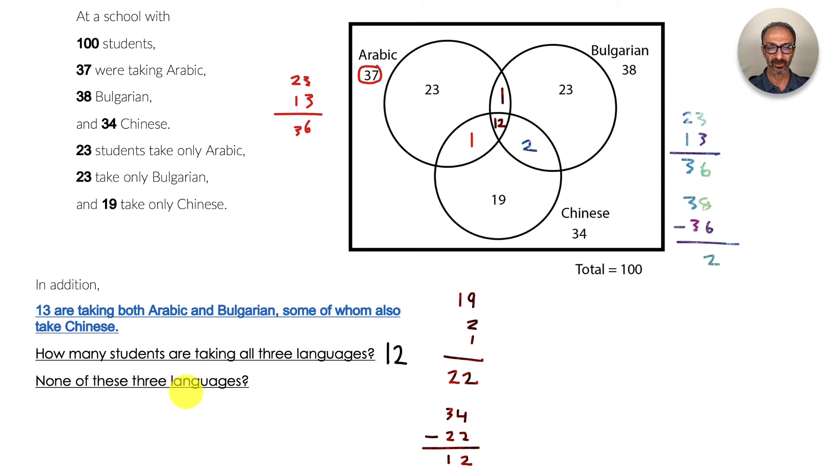None of these three languages - I need to add all these numbers inside and see how far we are from 100. I have 23, there's one more 23, there's 19, there is 1 and 1 and 12 and 2. Add them up, I'm saving time - the total is 81.